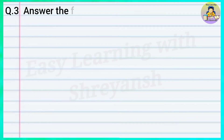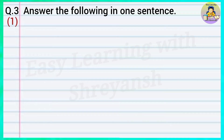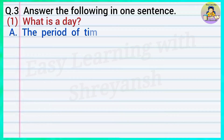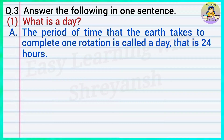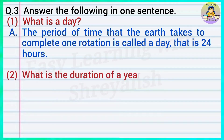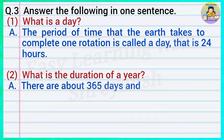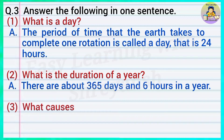Question number three, answer the following in one sentence: One — what is a day? Answer: The period of time that the earth takes to complete one rotation is called a day, that is 24 hours. Two — what is the duration of a year? Answer: There are about 365 days and six hours in a year.